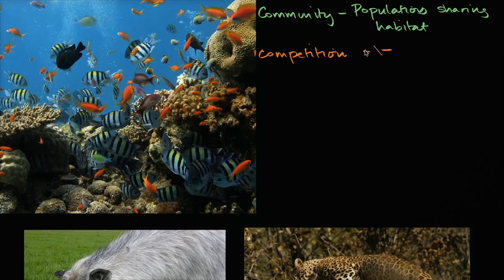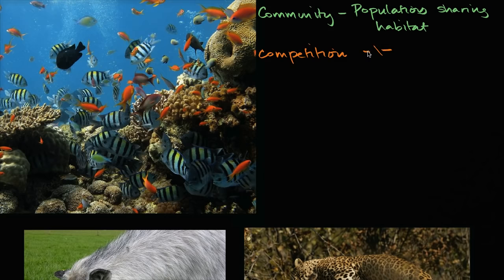That minus/minus means that when two species or two populations are in competition, the more you have of one, it's going to have a negative effect on the other, and vice versa. If I'm a plant competing with another plant and that one is taking my light, the more of it there is, the more negative the impact on me. Similarly, if we compete for food, the more of me that's eating your food, the more negative the impact on you.